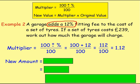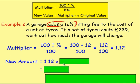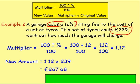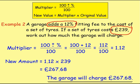Brilliant. To work out the new amount, you take your multiplier — the 1.12 — and you multiply it by the original value. This question is talking about a set of tyres for £239, but something is being added onto them, so that's the price we're starting with. We multiply our multiplier by the £239, and you get £267.68. That means the garage will charge you £267.68.